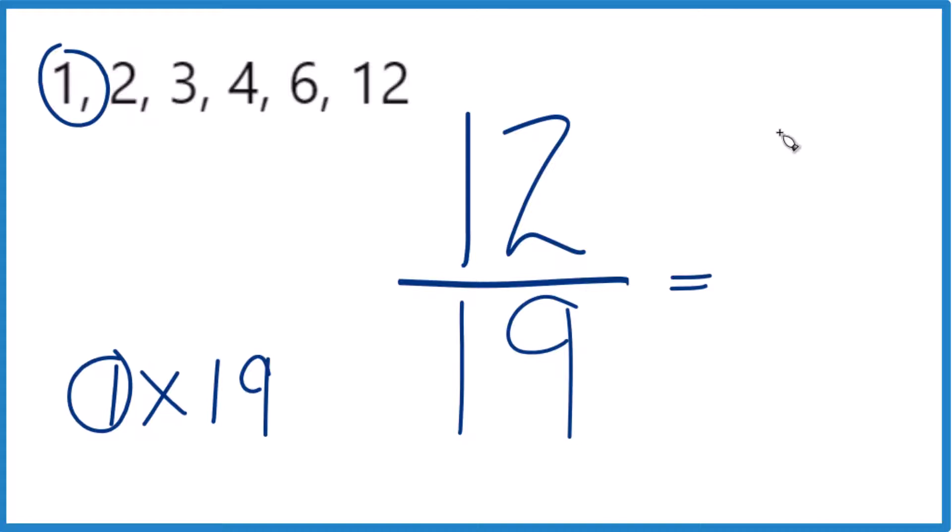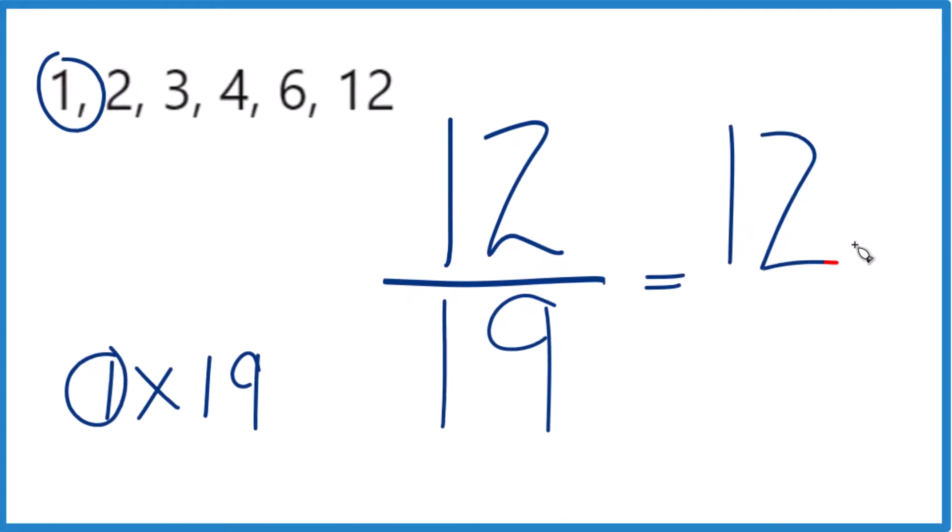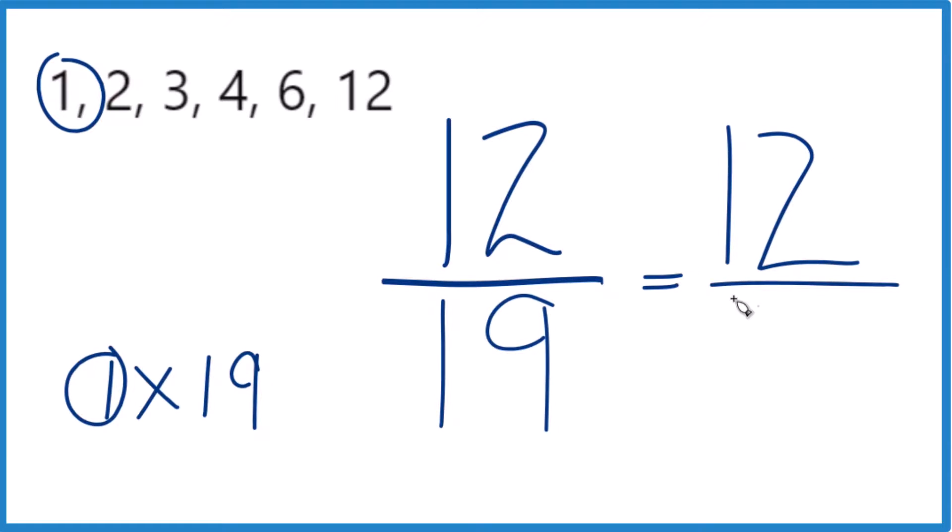So if you divide 12 by 1, you get 12. If you divide 19 by 1, you get 19. And you can see we're right back where we started, 12/19.